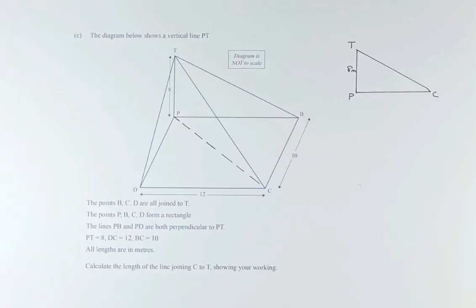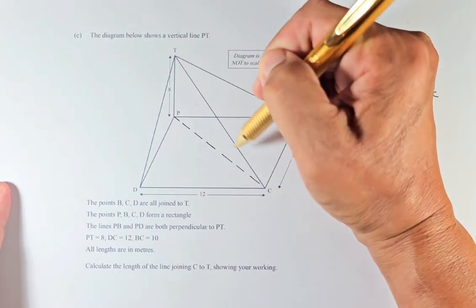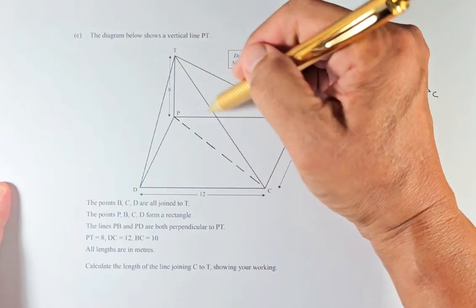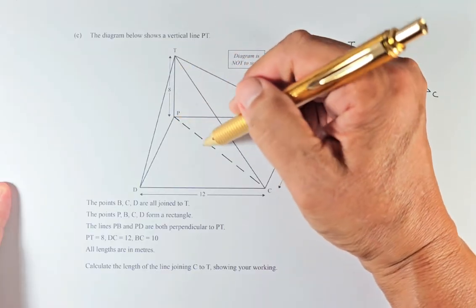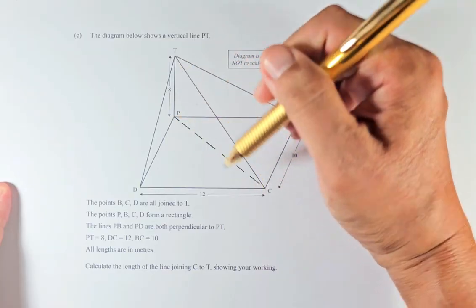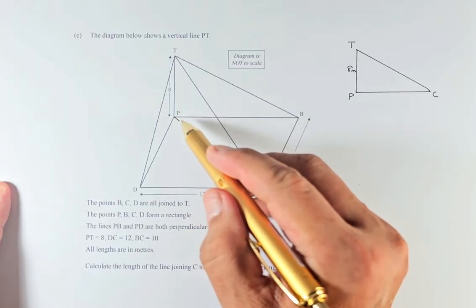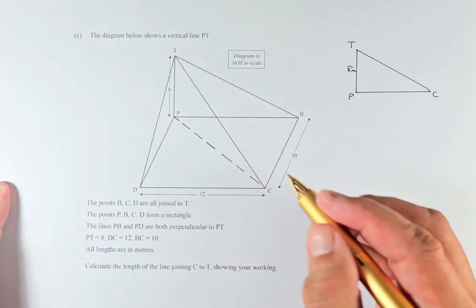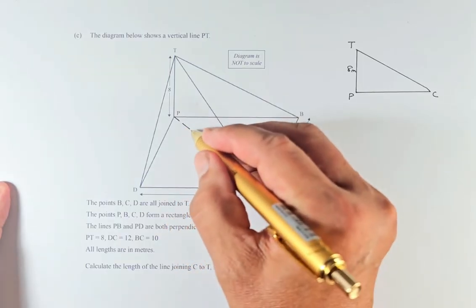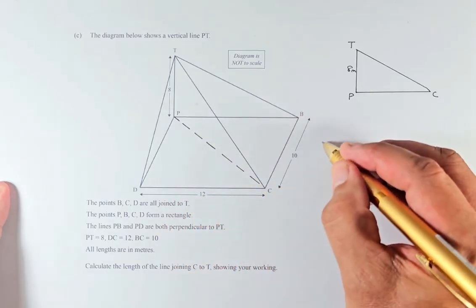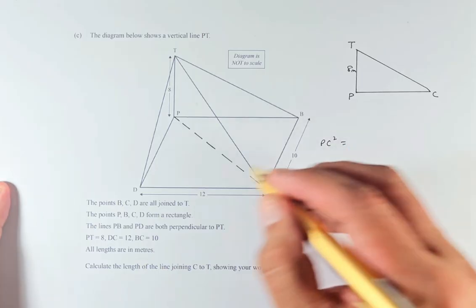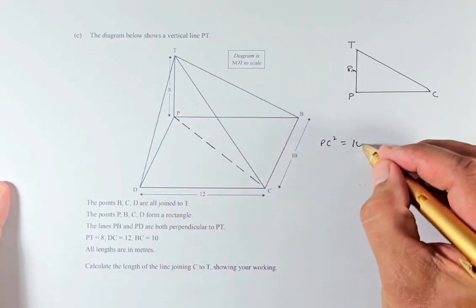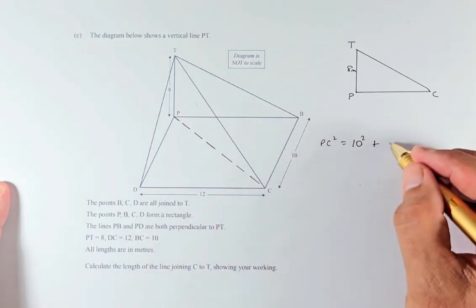So they're looking for this joint CT. Before we can calculate CT, we have to calculate this line PC. PC is a diagonal of this rectangle. So it's very simple. PC squared. This is the longer side, PC squared. So PC squared is equal to 10 squared plus 12 squared.